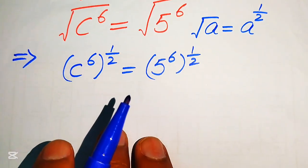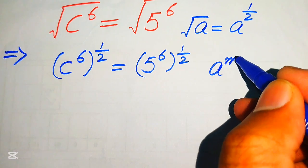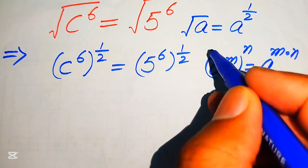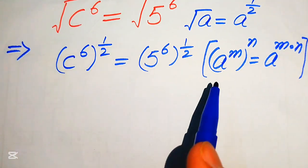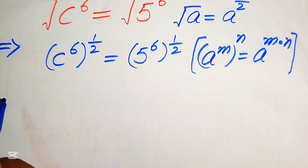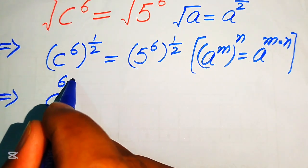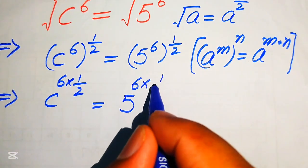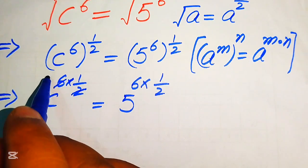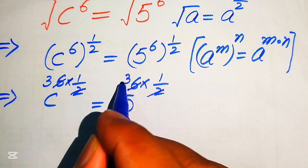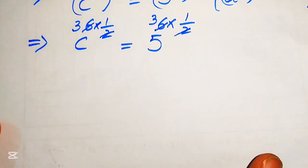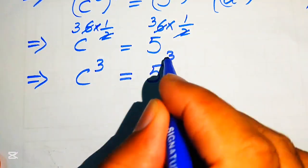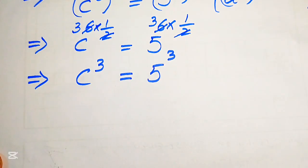Here we apply the exponent law. You know that if you have a to the power of m, to the power of n, it equals a to the power of m multiplied by n. According to this exponent law, we multiply the two exponents. It will be written as c to the power of 6 multiplied by 1 over 2, equals 5 to the power of 6 multiplied by 1 over 2. Since 2 times 3 is 6 on both sides, we obtain c cubed equals 5 cubed.